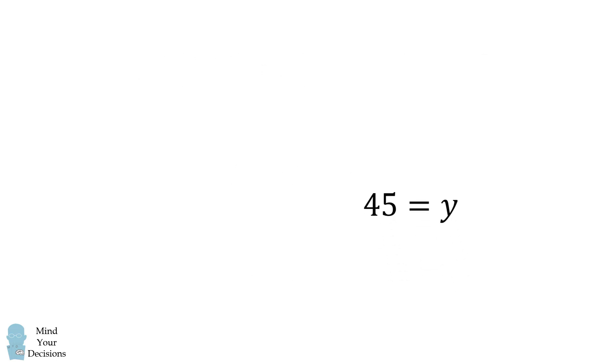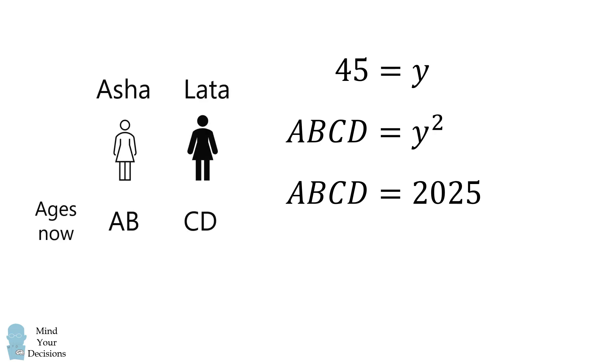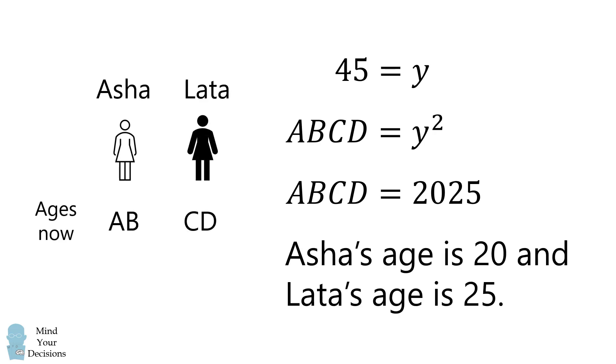We will then recall that y squared is equal to ABCD. We thus need to square 45, and that's equal to 2025. And thus, we can solve that AB is equal to 20, and CD is equal to 25. Asha's age is 20, and Lata's age is 25, and that's the answer.